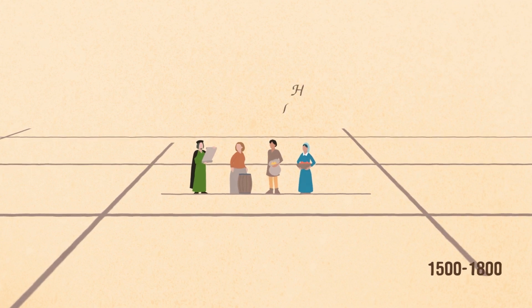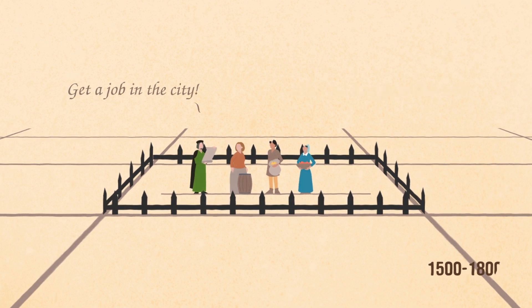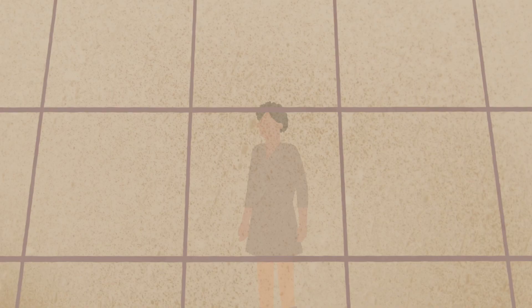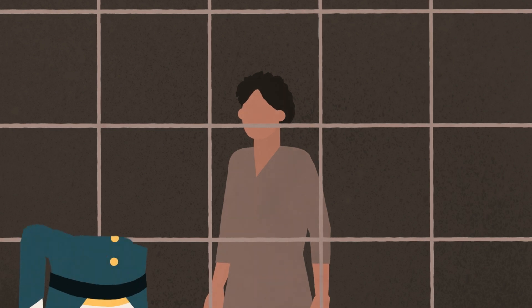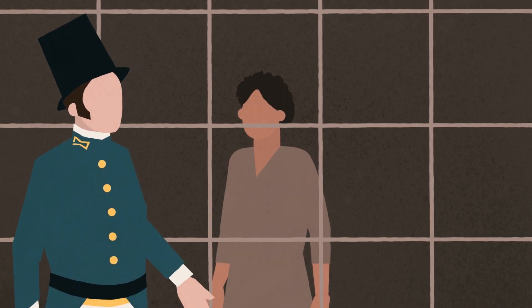The European aristocracy enclosed their common lands and cut off the peasants' ability to provide for themselves, making them dependent on money. To force those who resisted jobs, beggars laws were passed and police were invented to enforce them.